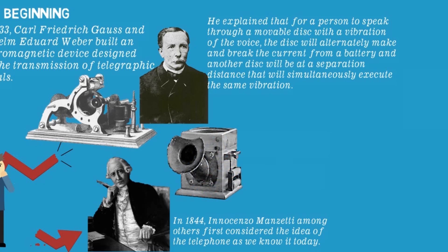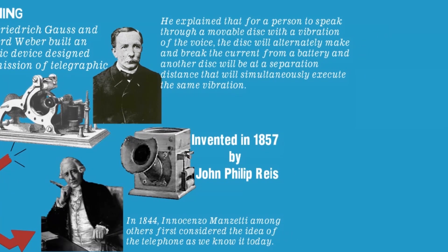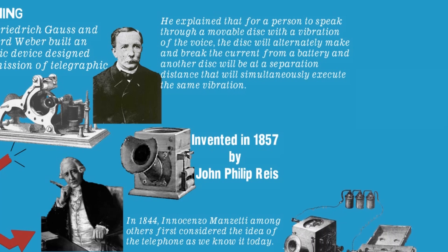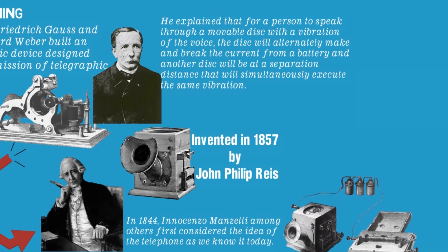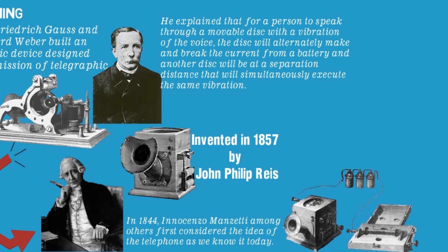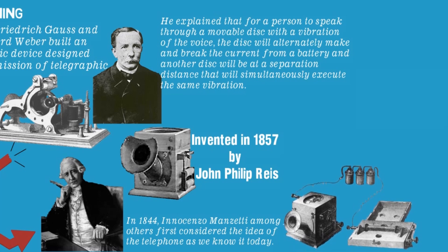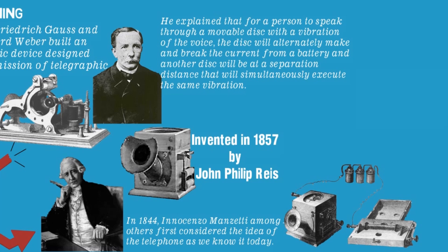The Reis telephone was invented in 1857 by Johann Philipp Reis. The transmitter was difficult to operate because the relative position of the needle and contact were critical to the device's operation. It was considered a telephone since it could transmit voice sound electrically over a distance, but it was hardly used commercially as a practical telephone.